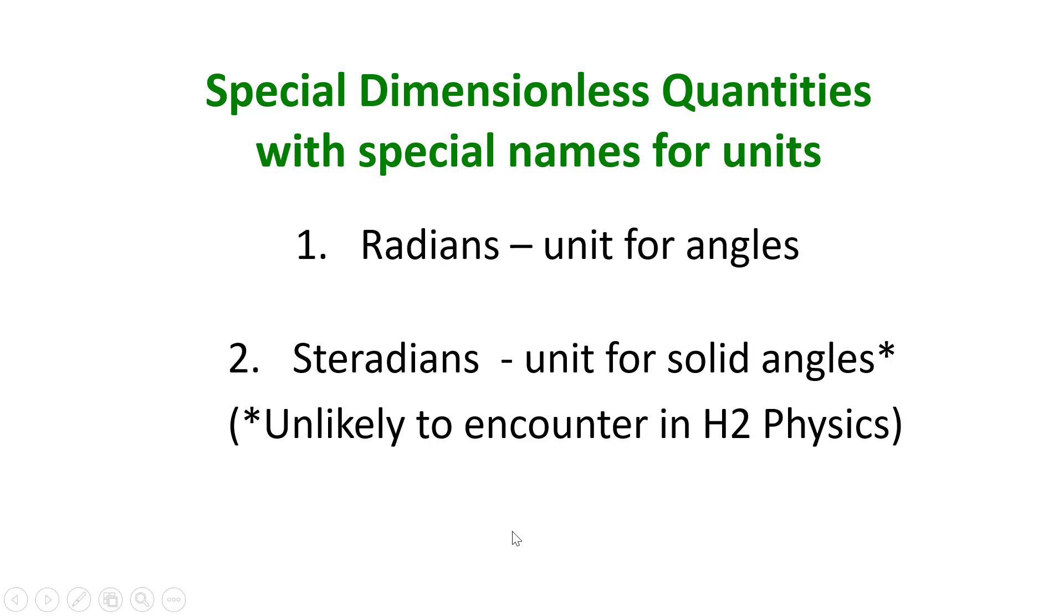There are, however, two cases where special name is given to the unit 1. This is to facilitate the identification of the quantity involved. Those two units are radians and steradians.